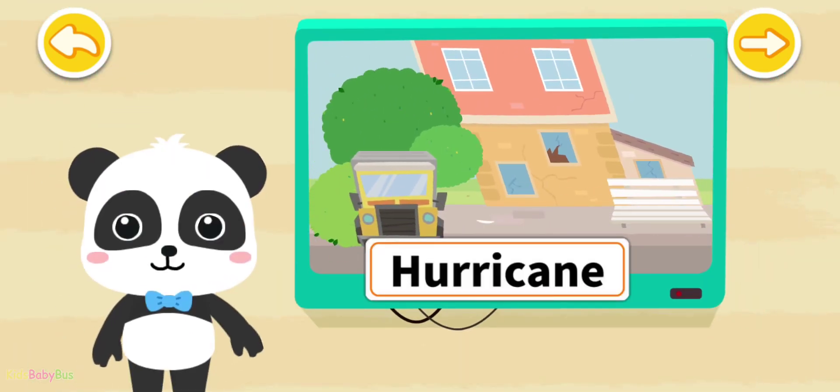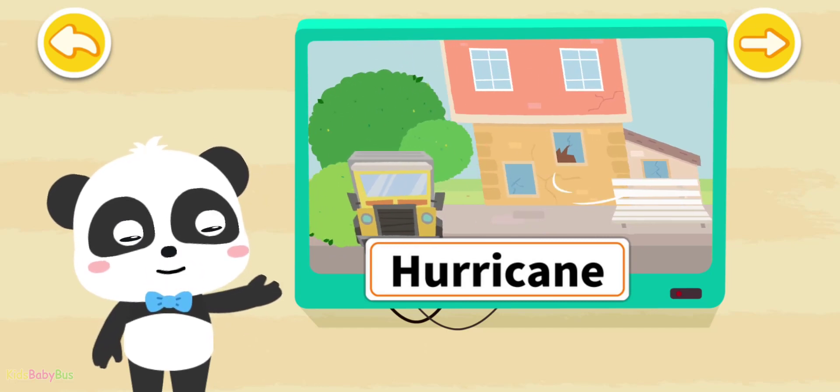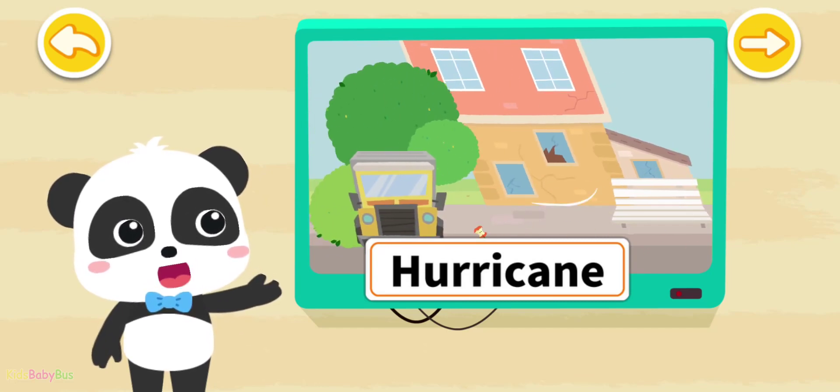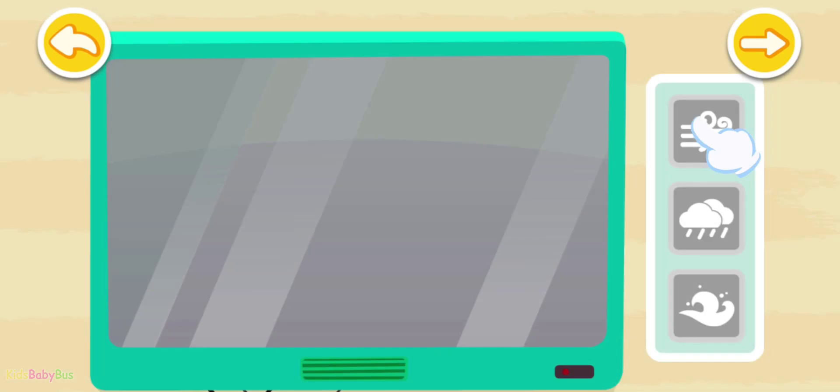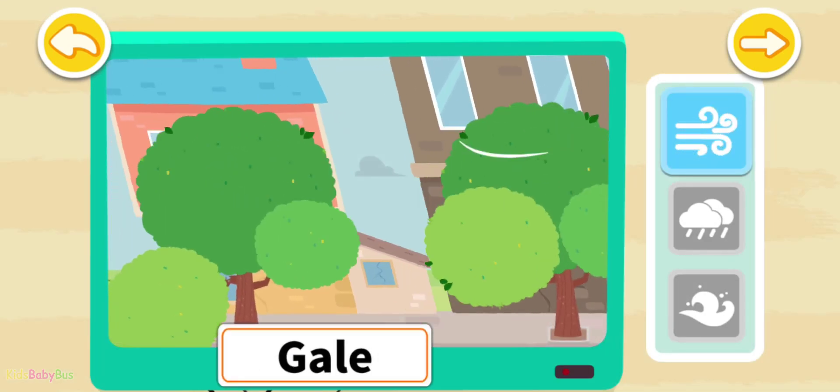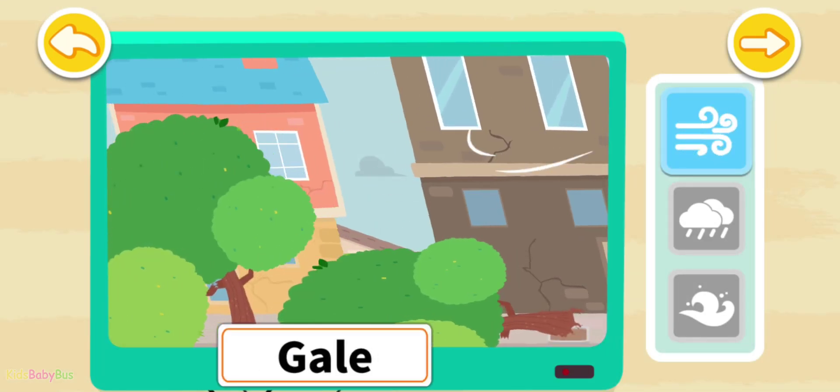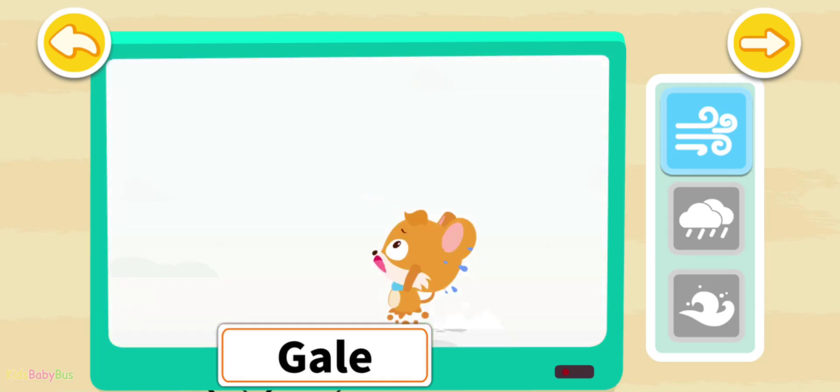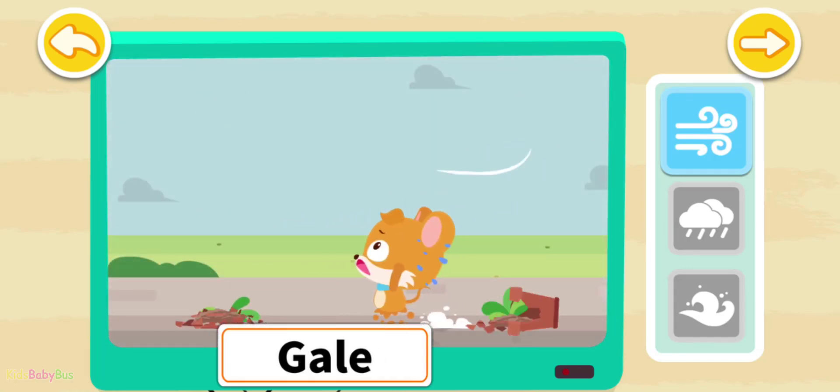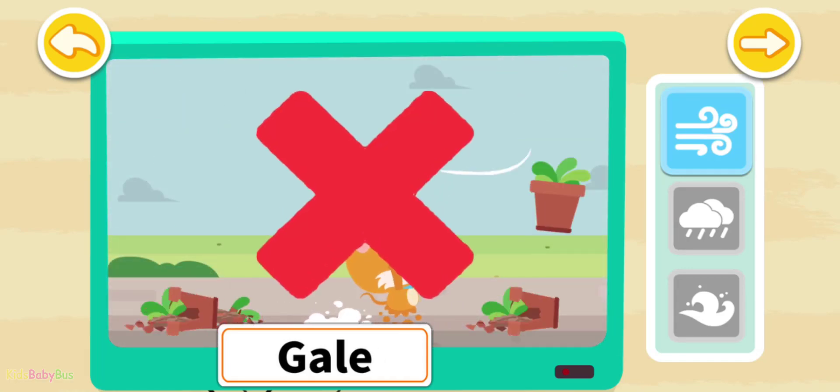Hi, I'm Kiki. This type of weather is called hurricane. Let's get to know it. During a hurricane, the gale will blow down trees on the street. Gale can also blow off flowerpots upstairs, which may cause pedestrians to be injured.